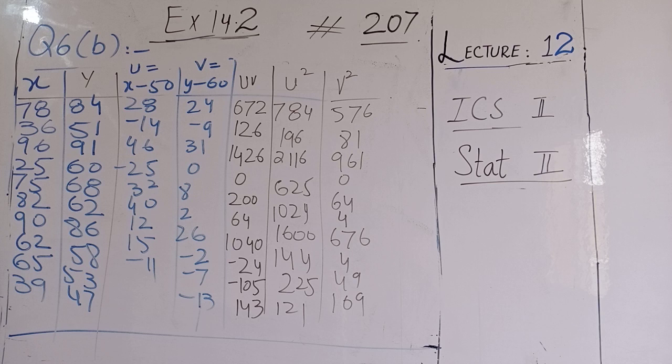So u equals x minus 50, v equals y minus 60. So we will draw these columns. We have x and y, which we have to convert. X minus 50 gives us u. Y minus 60 gives us v. Then u and v product column is uv. After that, u square and v square columns are coming. This way the columns are coming.